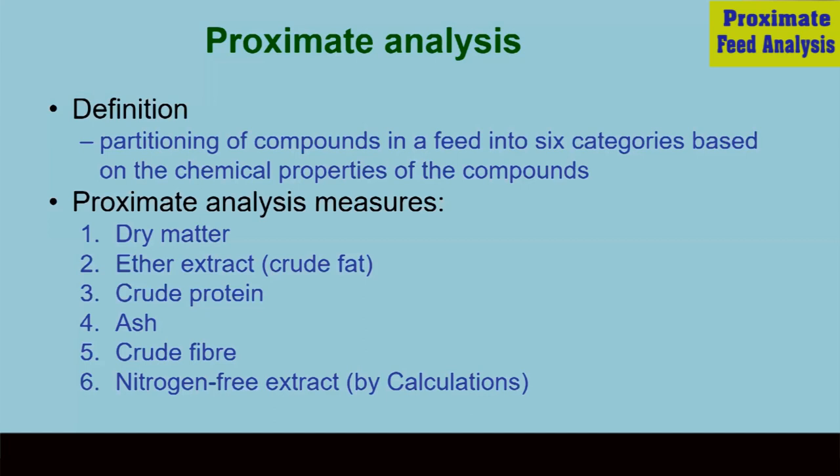The last one, nitrogen-free extract, can be calculated by having the first five values. So in this way, we can get six measures from this proximate analysis.